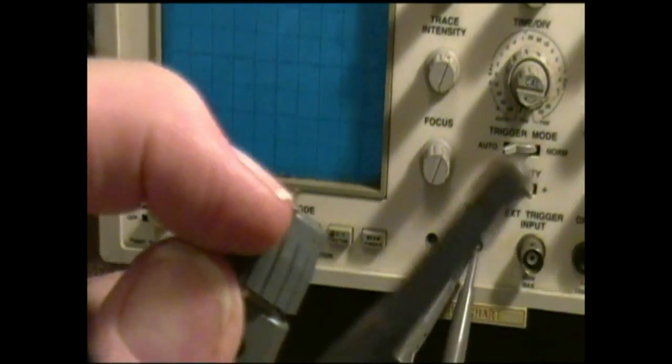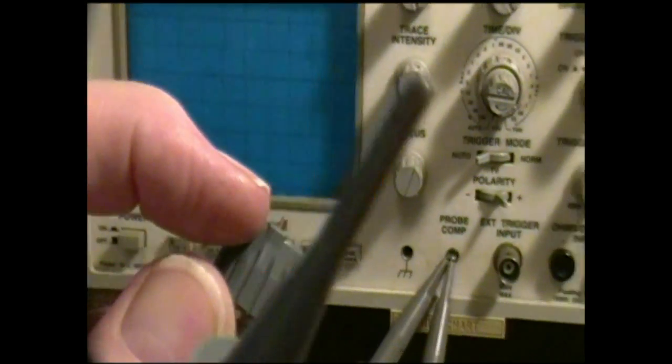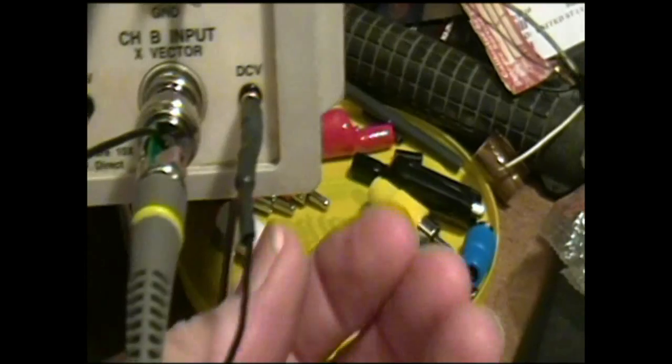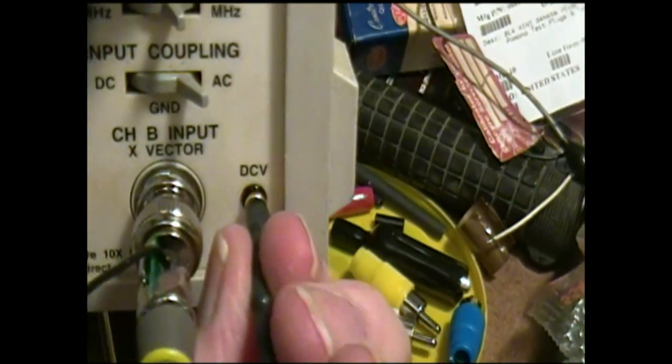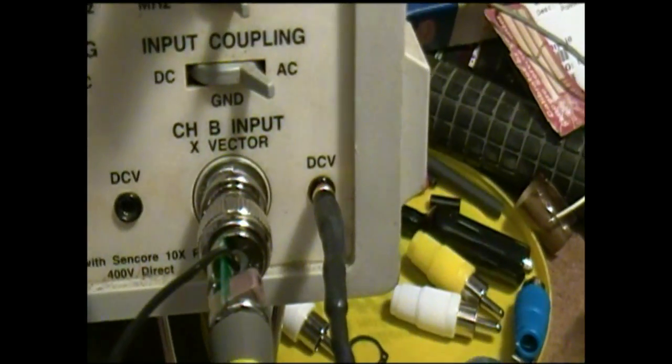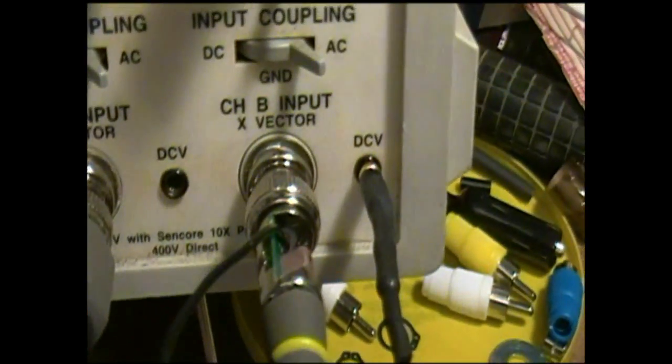What those are for: the extra wire fits into a socket that allows you to read the DC voltage of the point you're probing at the same time that you look at the waveform and measure its frequency or any of these things.